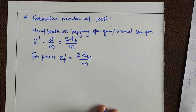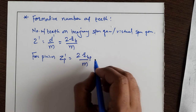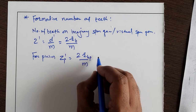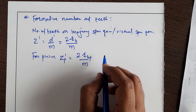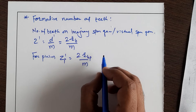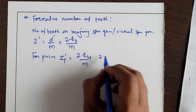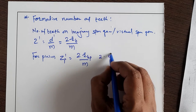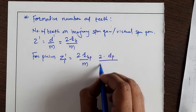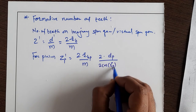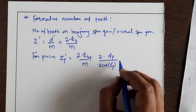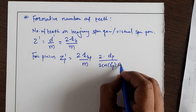Now r_bP — the backcone radius of the pinion — as seen in the previous video, is equal to d_P divided by 2 times cos(γ_P). Substituting this in: Z_P' equals 2 times (d_P divided by 2 times cos(γ_P)) divided by m.